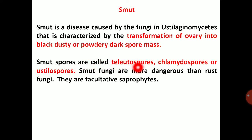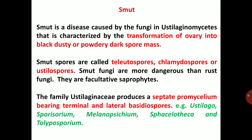Smut fungi are more dangerous than rust fungi. They are facultative saprophytes. Unlike rust fungi, smuts are facultative saprophytes. The family Ustilaginaceae produces a septate promycelium bearing terminal and lateral basidiospores. Examples: Ustilago, Sporisorium, Melanotus, Sphacelotheca, and Tolyposporium — these are all genera present in smut fungi.